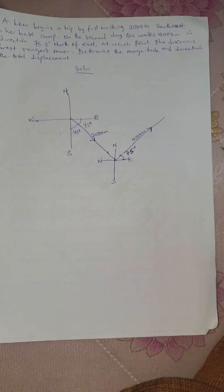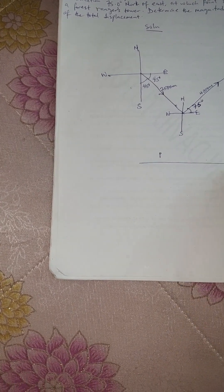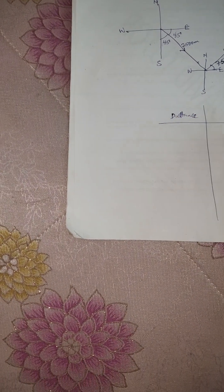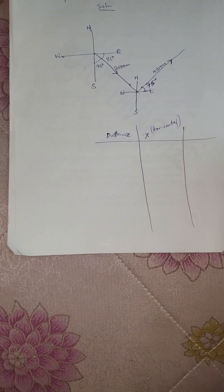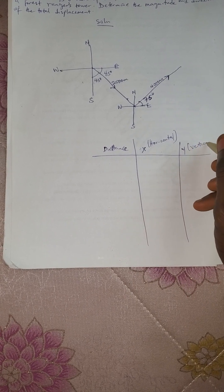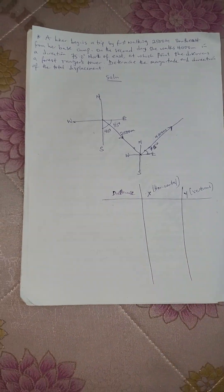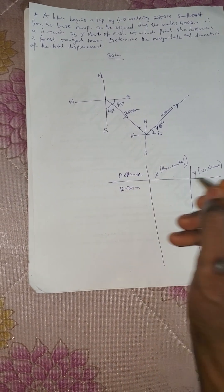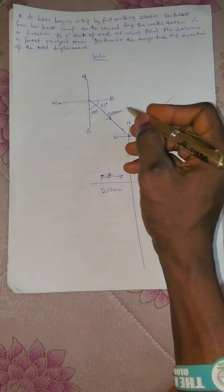We need to resolve this — the resultant of this. Don't forget, we are going to divide this into two. The distance we are given is distance, and we have x for the horizontal and y for the vertical axis.